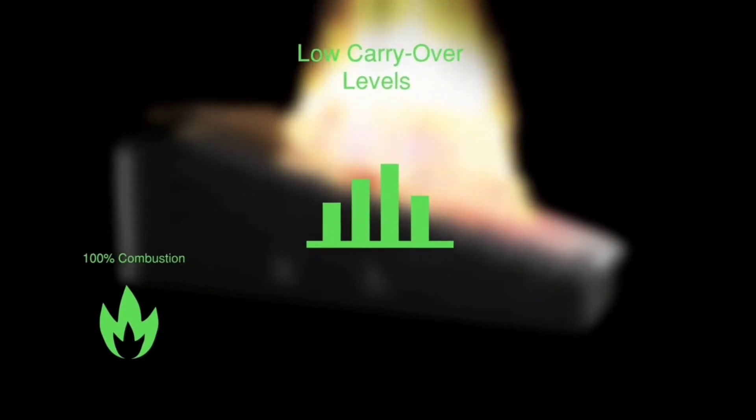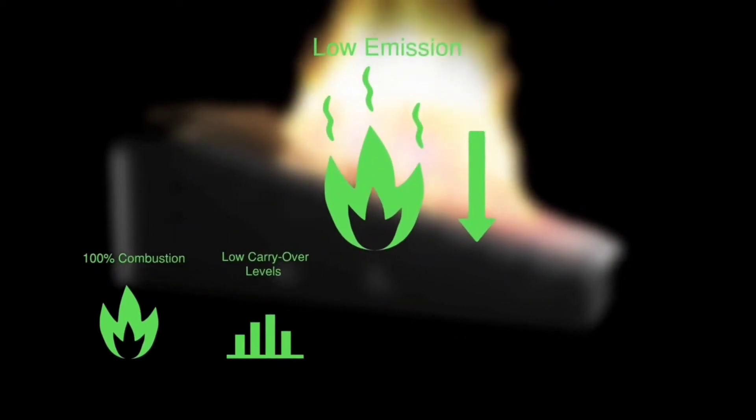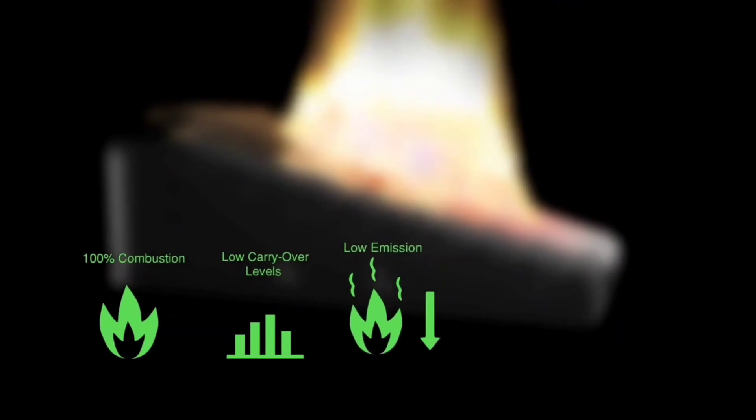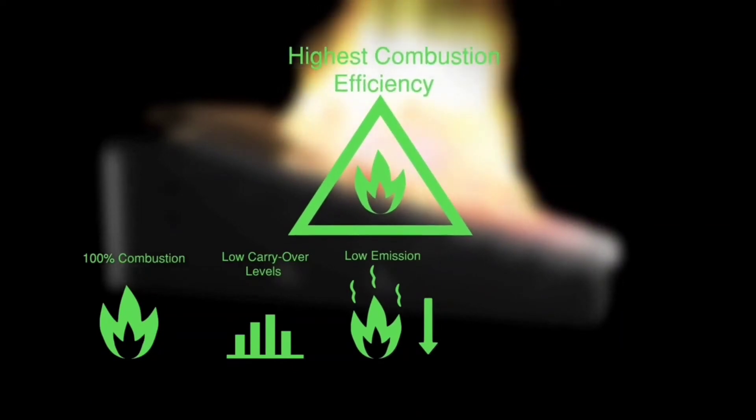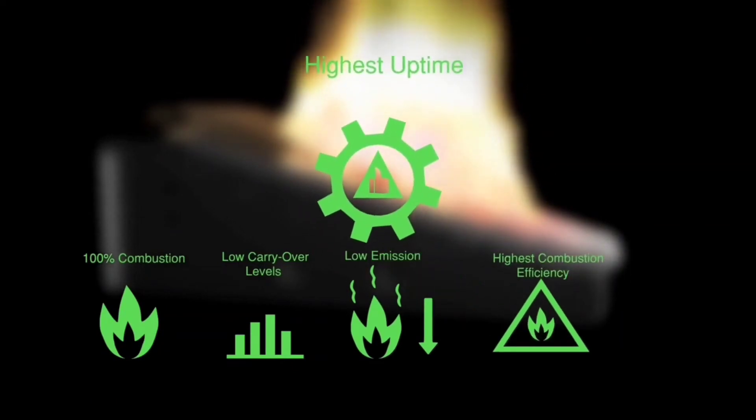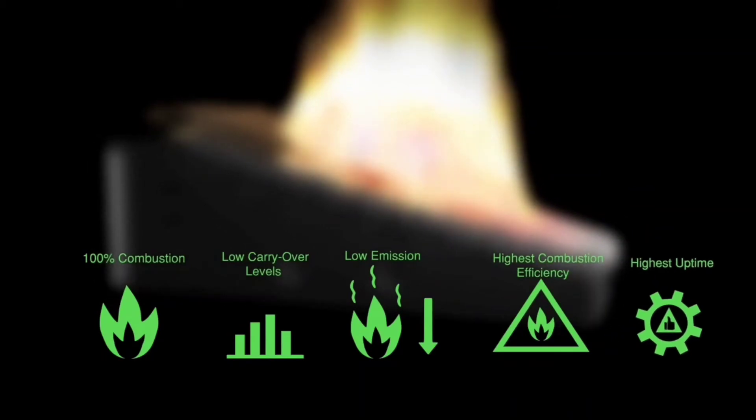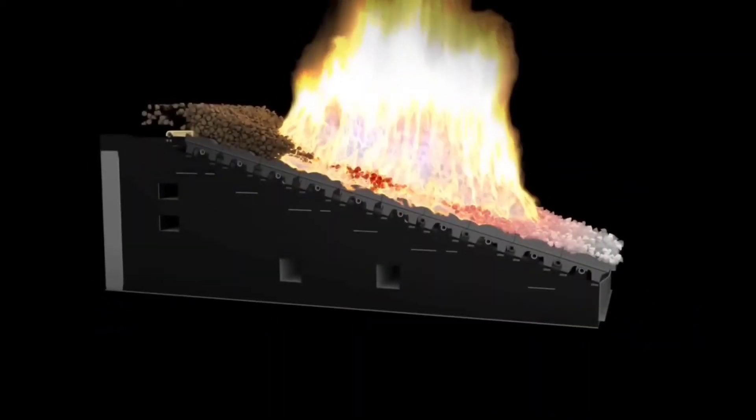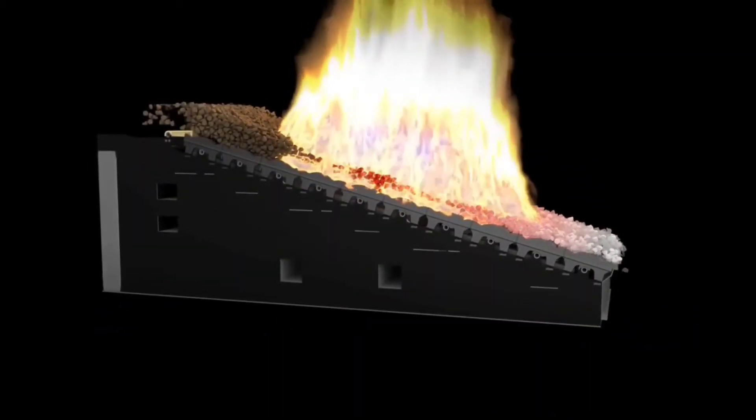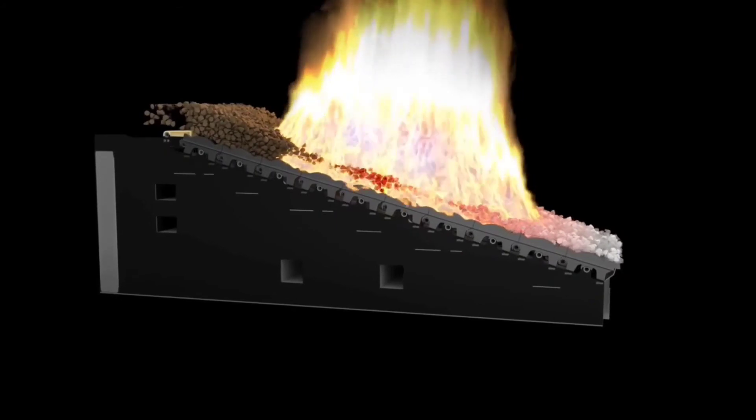The advantages of reciprocating grate are 100% combustion, low carryover levels, low emission levels, highest combustion efficiency, and highest uptime. Relative motion between fuel bed and grate helps deal with poor fuels up to 60% moisture content.